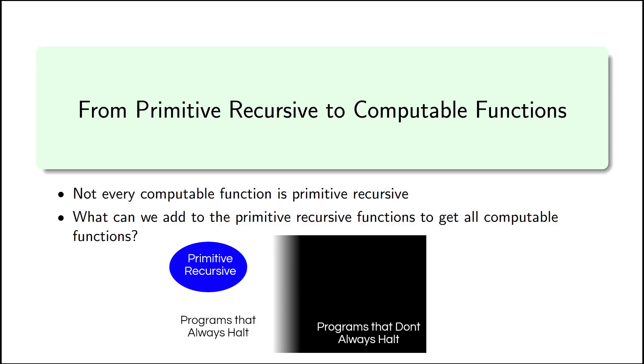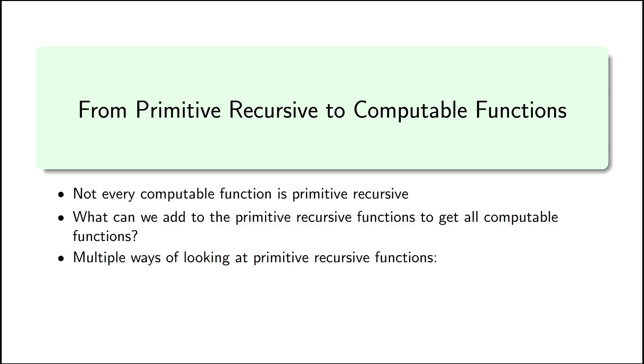The line between programs that always halt and programs that don't always halt is shrouded in Gödel's incompleteness theorem-style nonsense. We have programs that should always halt, but can't be proved in ZFC to always halt. Things like that. And so there isn't going to be a nice thing that we can add to our primitive recursive functions to take us exactly to that line and not over.